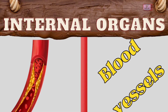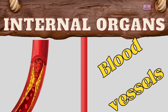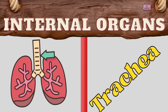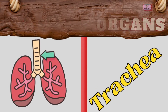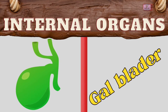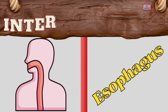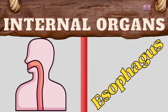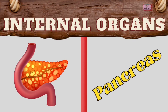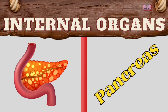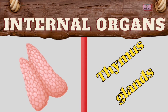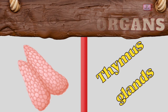Mouth. Trachea. Gallbladder. Esophagus. Pancreas. Thymus Gland. Muscles.